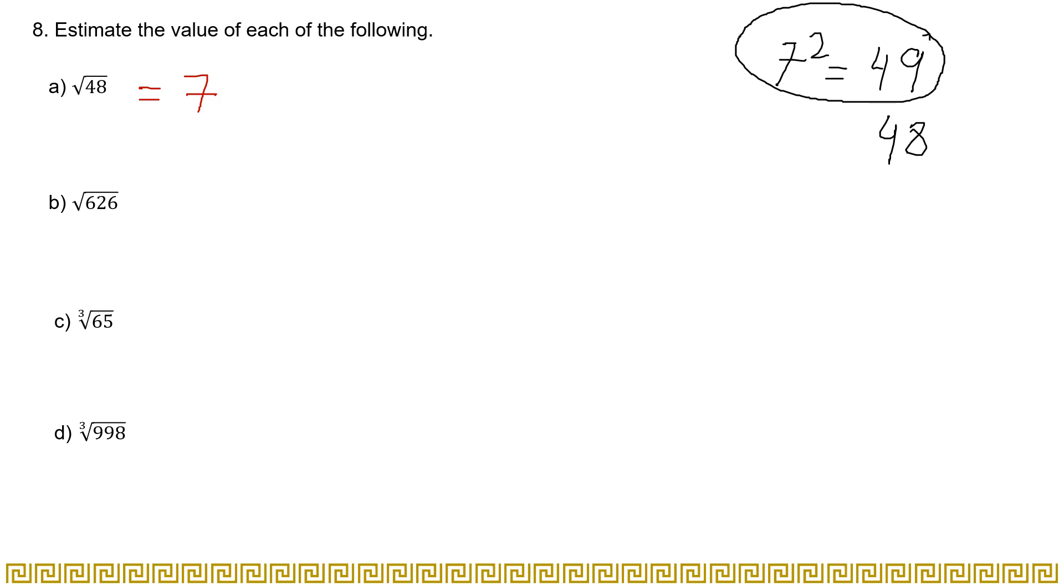Now see, in case of 626. Now for solving this question, you must know some perfect squares. Like if you multiply 25 twice, you will get 625. Now 625 is very nearer to 626, so the estimated value for part b will be... sorry, not 625, it will be 25. The root of 626 will be 25.